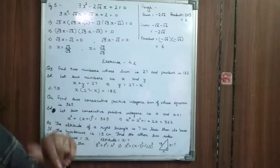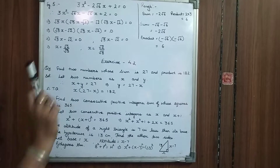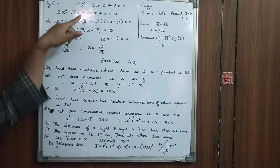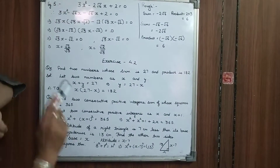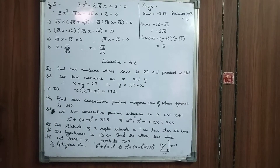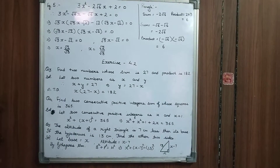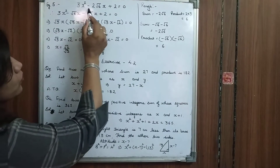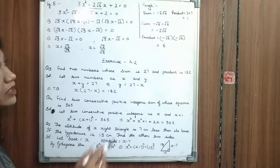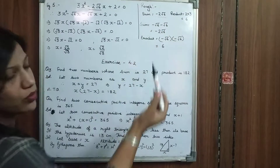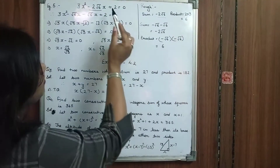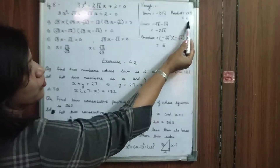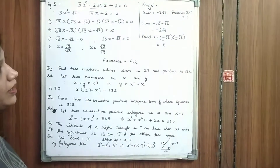Let's come to Example 5. Example 5 is given to you: 3x² minus 2√6x plus 2 equal to 0. As we have discussed earlier, minus 2√6 is your b, so your sum of the numbers should be equal to minus 2√6 and the product of the numbers should be equal to 2 into 3, equal to 6.